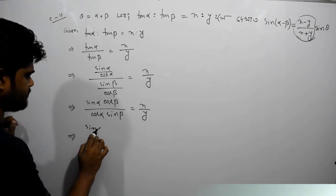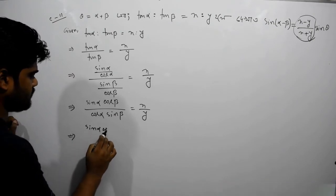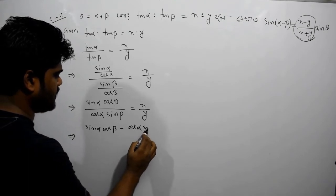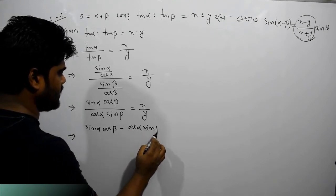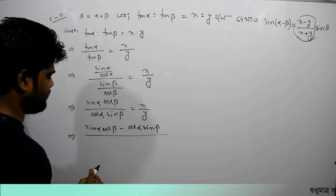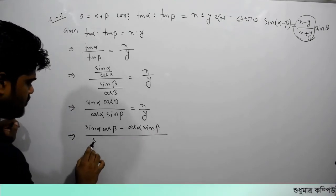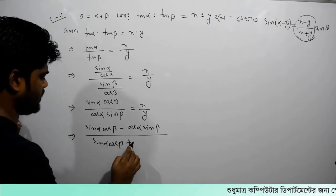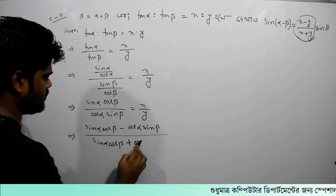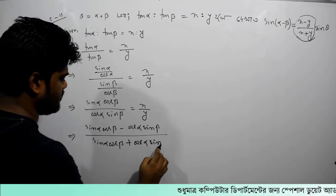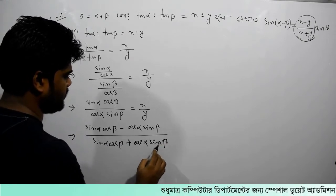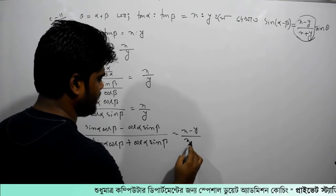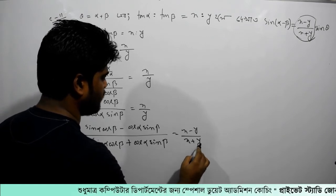Sin alpha cos beta minus cos alpha sin beta, divided by sin alpha cos beta plus cos alpha sin beta. And what is the same thing? x minus y divided by x plus y.